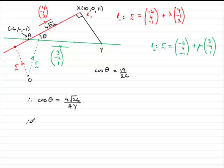So since we know what cos theta is, it's 19 over 26, we've got 19 over 26 equals 4 root 26 over AY.